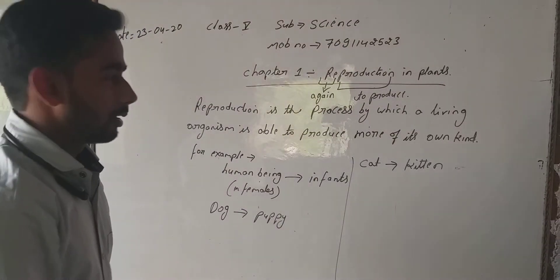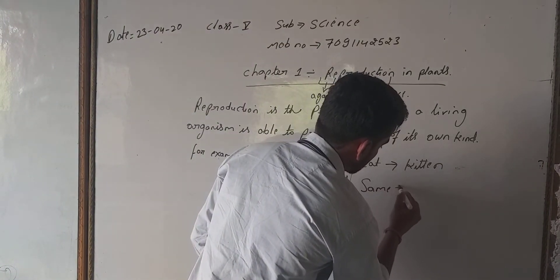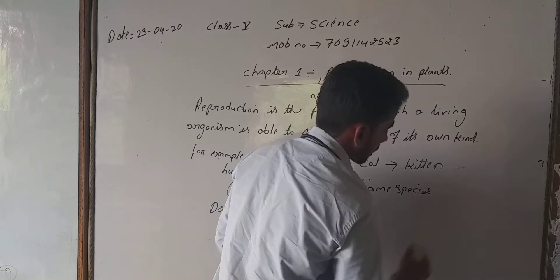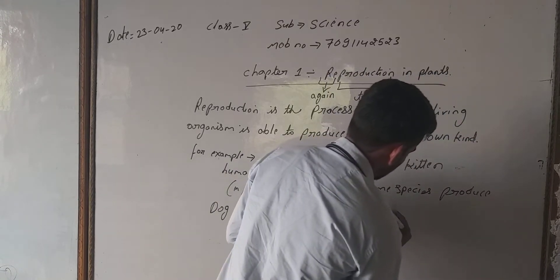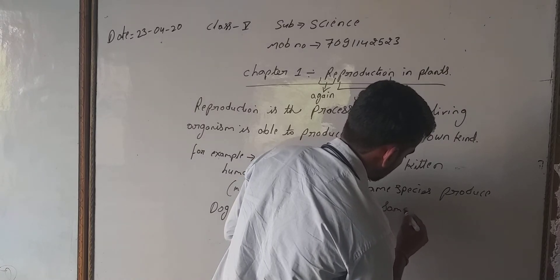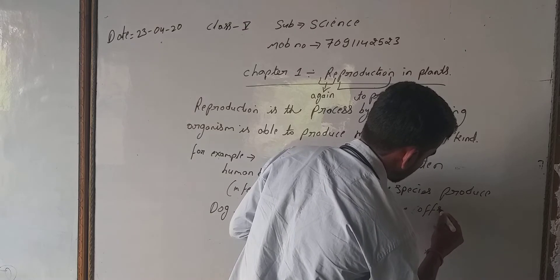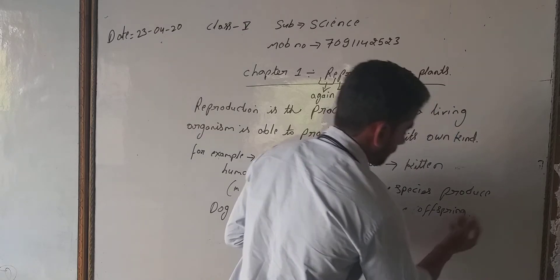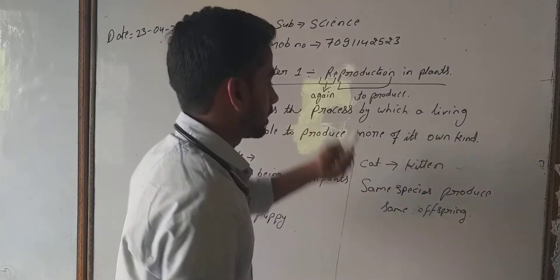So same species produce same offspring. Offspring means the individuals which are formed after reproduction.